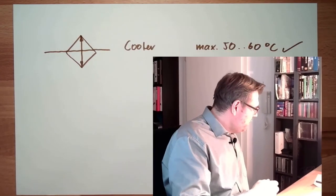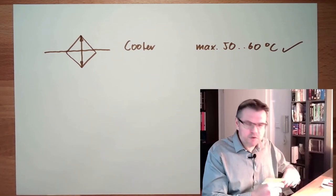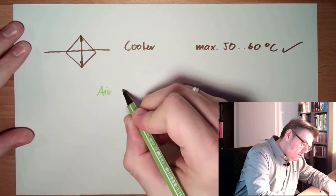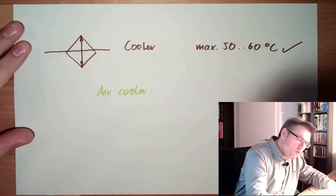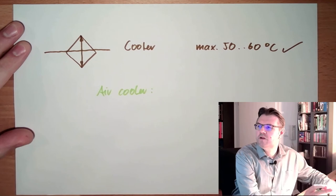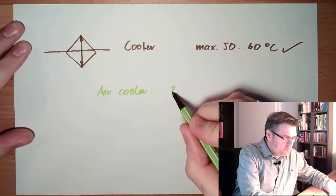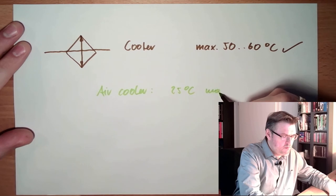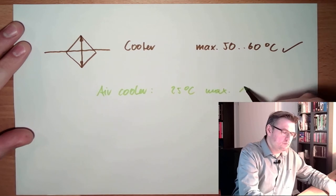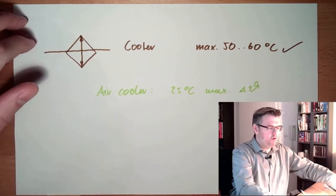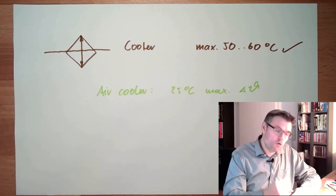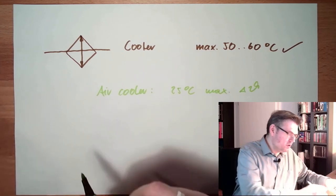Often used, we can reach temperature differences, so with an air cooler, we can reach temperature differences of 25 degrees maximum temperature difference around this. If you want to have it more, we need a water cooler.